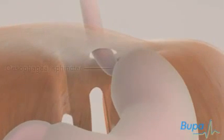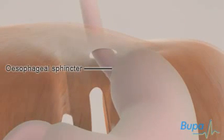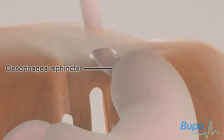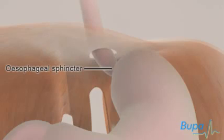The oesophageal sphincter acts like a one-way valve to stop the acid that's produced in your stomach to break down food from flowing up into your oesophagus. Here, we show the valve opening and closing.